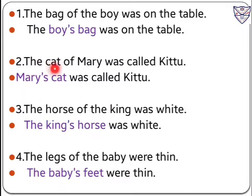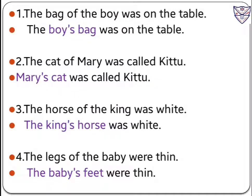Number two: the cat of Mary was called Kittu. We will frame this sentence into possessive case. The answer will be: Mary's cat was called Kittu. When we say Mary's cat was called Kittu, we can say that the cat belongs to whom? To Mary. It shows possession — the cat belongs to Mary.